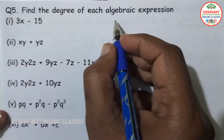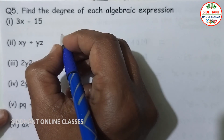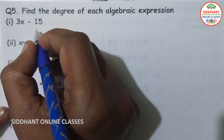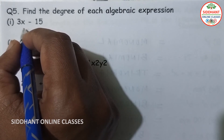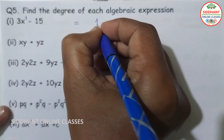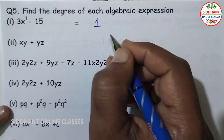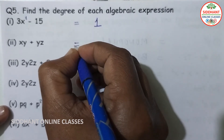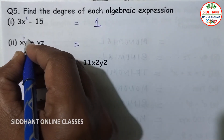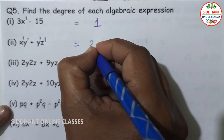Question number 5: find the degree of each algebraic expression. First — expression with x — x has degree 1 and constants have no degree, so the degree is 1. Second — xy plus yz — x has degree 1, y has degree 1, z has degree 1; the term xy has degree 1 plus 1 equals 2.